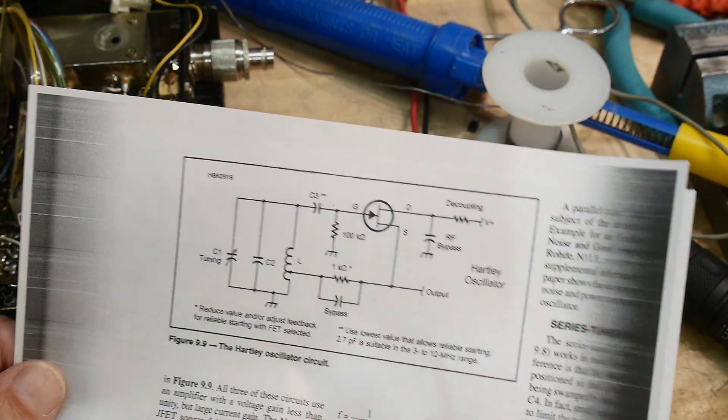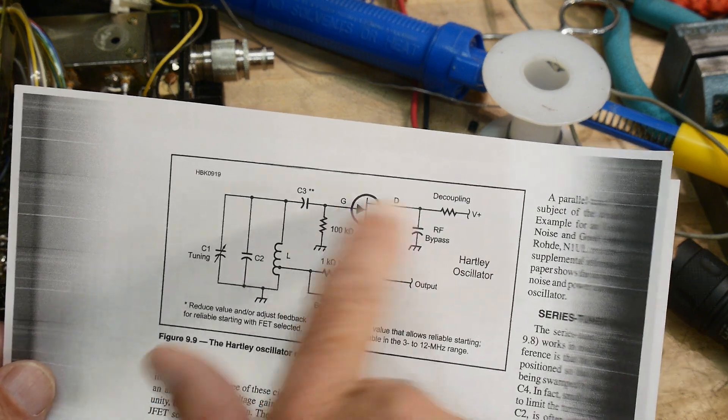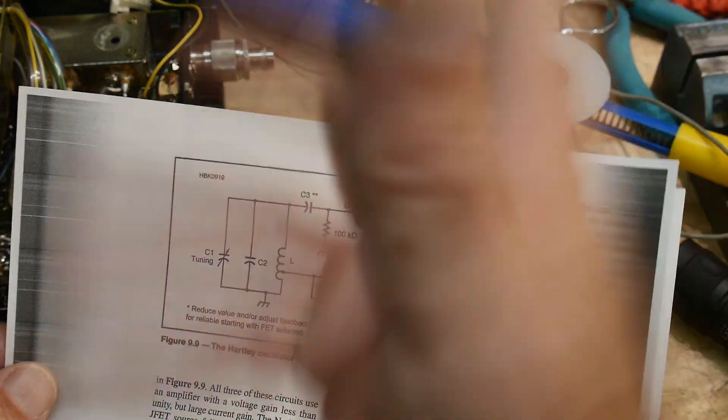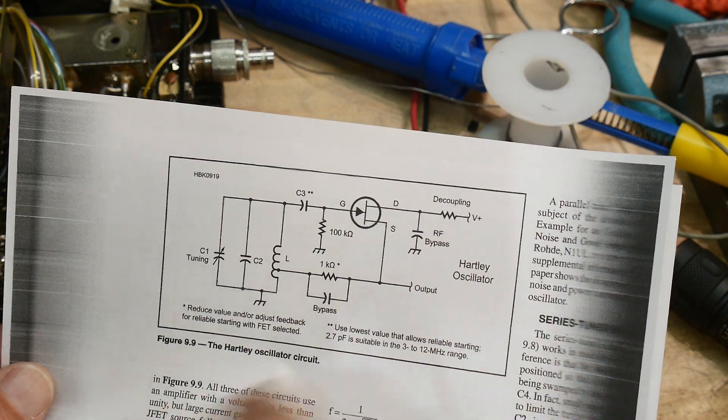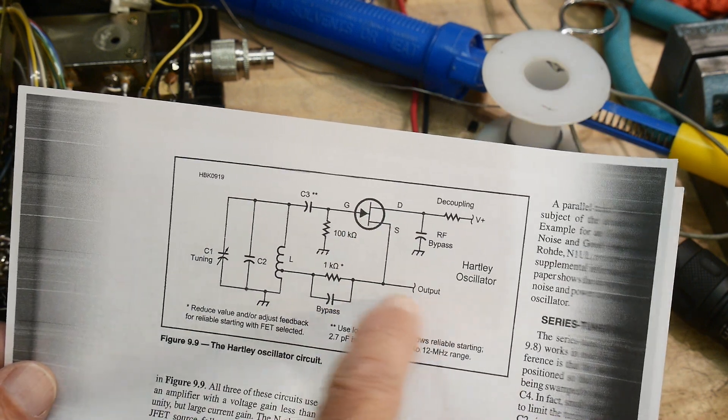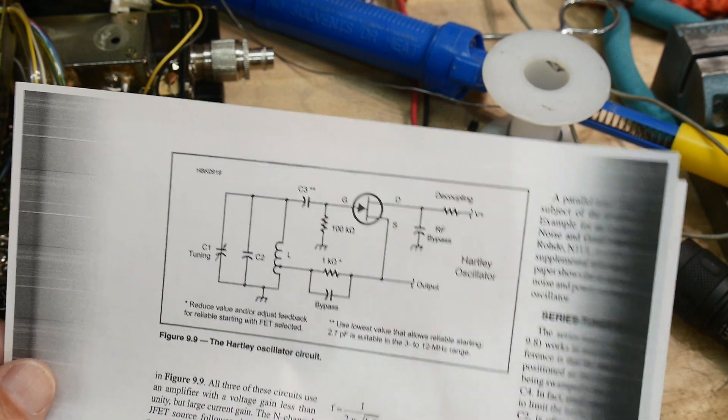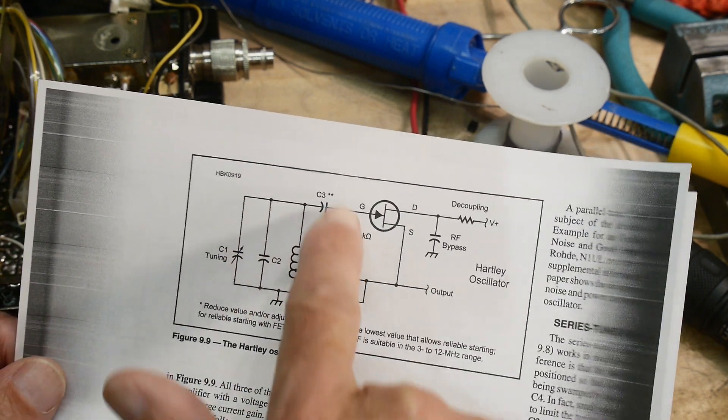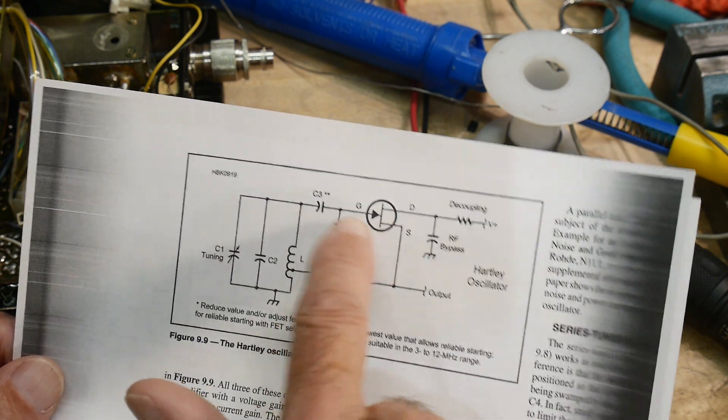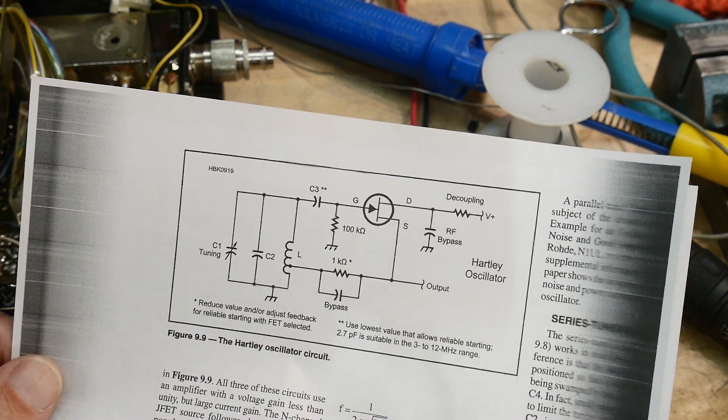And then D is just tied to plus 12. They have a little bit of decoupling here just to show you that you should probably do that so it doesn't get into your power supply, but for this demonstration I just left it off. The output comes off of the source here, and I just left all the values the same.